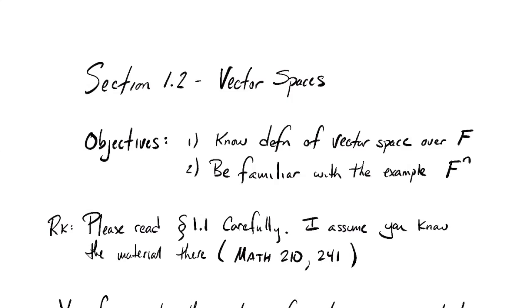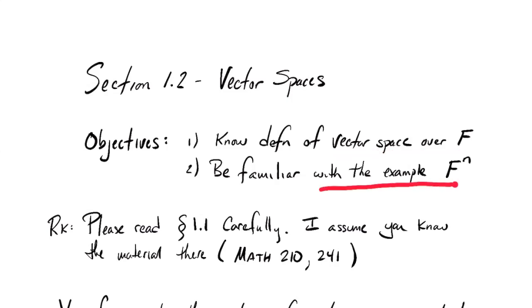You can see I've got two objectives for the lecture. The first is to know the definition of a vector space over a field F, give a careful definition of it, and then focus on one example — the vector space of n-tuples over that field. I'm not going to cover section 1.1 in this video or in class. I want you to read that carefully; I'm going to assign some homework problems out of it, assuming you basically know that material from Calc 3 or the lower division linear algebra class.